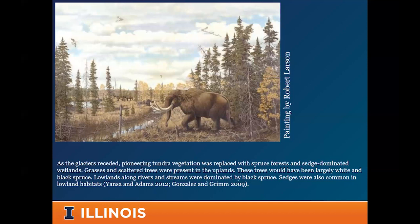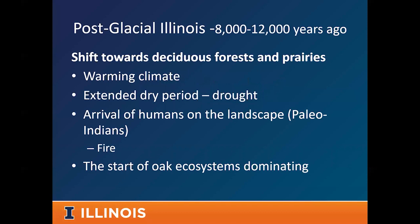Following this, we move into the post-glacial period. After the glaciers completely receded, we had a period of cold, wet spruce forest that gradually transitioned. From 8,000 to 12,000 years ago, there was a drying and warming period — the climate shifted, we had much warmer temperatures, and starting around 8,000 years ago, almost a super drought. These warmer, drier conditions pushed out and became unsuitable for spruce forests. This is where we started to see the development of deciduous forests in Illinois — oaks getting on the landscape for the first time and becoming the dominant force in our forest. This was the start of what we see today; the beginning of our oak ecosystems across the state.